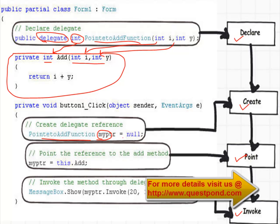The third step is we point this reference to the method add — we say myptr is going to point to this.add. Finally, we invoke the delegate by using the invoke function. We call myptr.Invoke, passing two numbers to it and showing the output. So we declare the delegate using the delegate keyword, create the reference, point it to the method, and finally invoke the function.